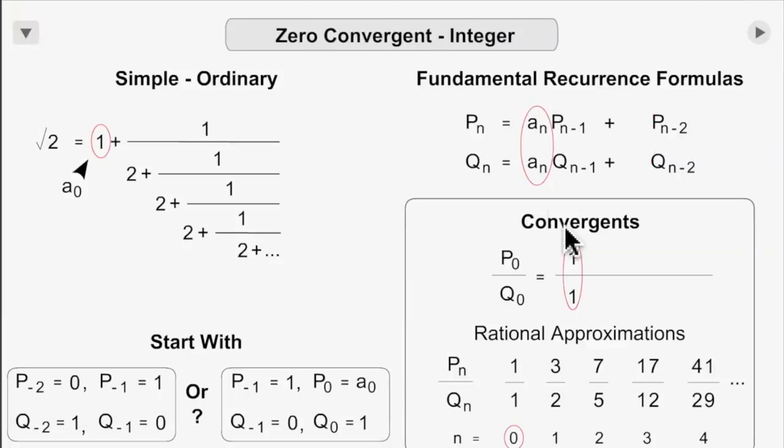And a sub n's are all the outside, a sub 0 is 1 in this case, and the n here is shown down here.